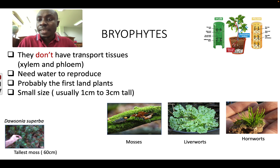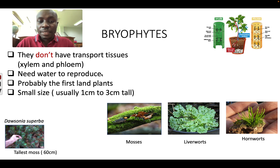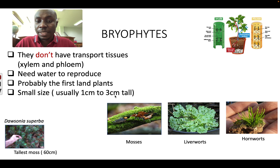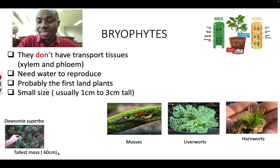Bryophytes need to stay near water so that they can get water easily since there is no xylem and phloem. They also need water to reproduce — the sperm from the bryophytes needs water to swim to join with the egg. They are about one to three centimeters tall. The biggest or tallest moss is Dawsonia superba, which is the tallest moss, about 60 centimeters tall.